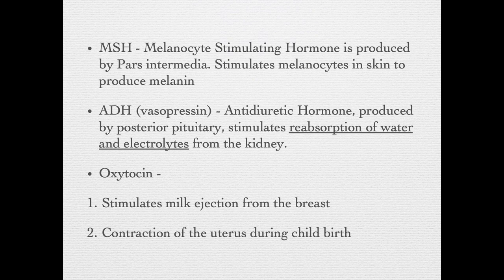The MSH or melanocyte stimulating hormone is produced by the pars intermedia part of the adenohypophysis. As the name suggests, this hormone stimulates the melanocytes in the skin to produce melanin, a pigment which imparts color to the skin. The posterior pituitary releases ADH and oxytocin.